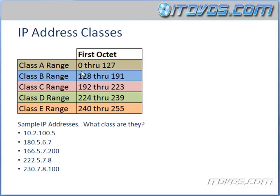So we have to have these class ranges memorized. When we get into subnetting, we'll actually see how they came up with these ranges. Basically, it has to do with the first bits in the first octet. If the first bit is a 0, then it's a Class A IP address. If the first two bits are a 1 and a 0, then it's a Class B address. If the first two bits are 1 and 1, then it's a Class C address.